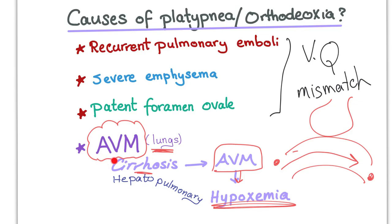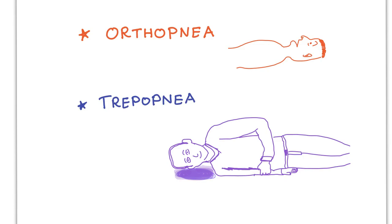This process is called hepatopulmonary syndrome. Note that platypnea-orthodeoxia is different from orthopnea and trepopnea. Orthopnea is shortness of breath on lying down, relieved by sitting up. Trepopnea is when the patient prefers lying on his side to relieve shortness of breath. Both will be discussed in separate videos.